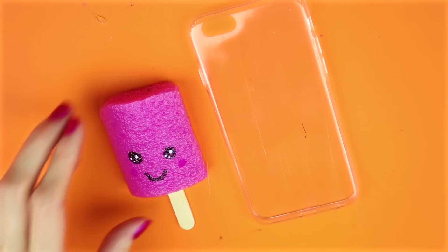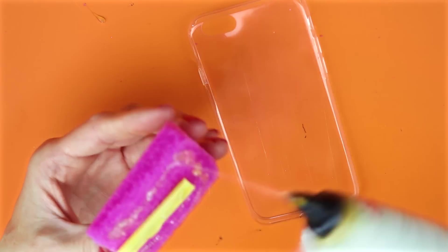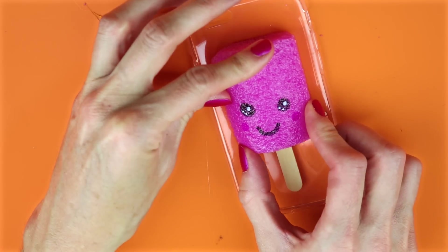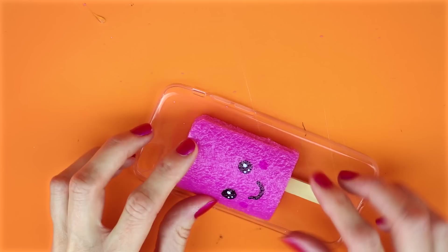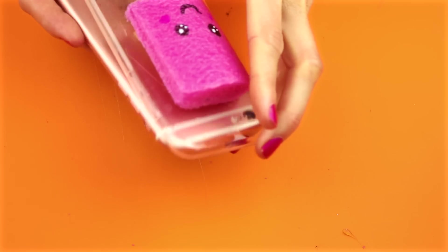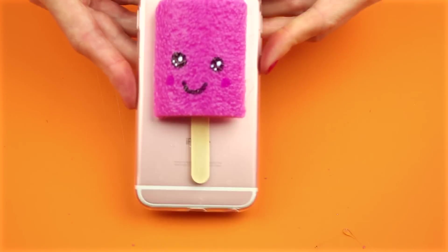Use any phone case that fits your phone and glue the popsicle to the phone case. And that is how you make this Kawaii Squishy Popsicle Phone Case.